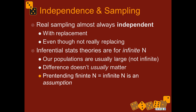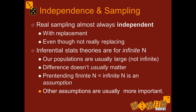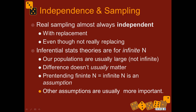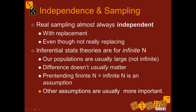Pretending there's an infinite n and that our samples are all independent is called an assumption. We know assumptions aren't ever technically all the way true, but as long as they're true enough, things will work and our results will be accurate enough. Other assumptions are usually more important than this one, but the independence of samples assumption is always there.